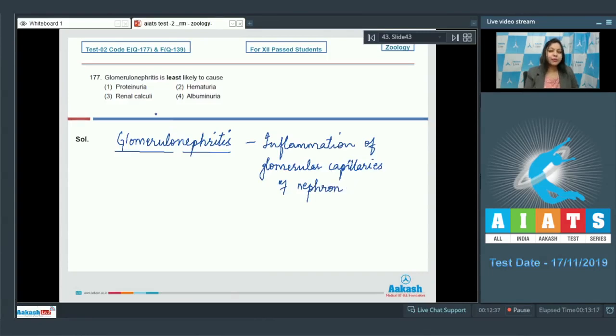This inflammation causes the permeability of membrane to alter. The alteration in this permeability causes the filtration of larger substances. Proteinuria can definitely occur, so this is the wrong option as proteins can be filtered in case of altered permeability of membrane.